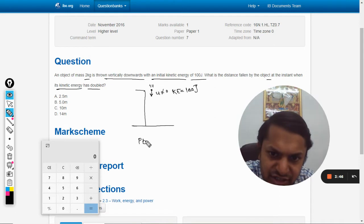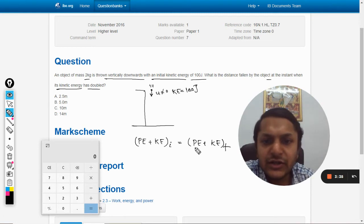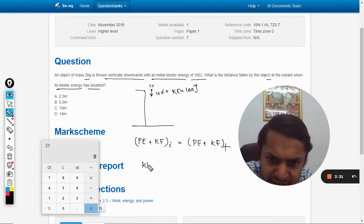The potential energy plus kinetic energy initial is equal to potential energy plus kinetic energy final. So accordingly we can see the change in energies, and kinetic energy final minus kinetic energy initial will be equal to potential energy initial minus final.